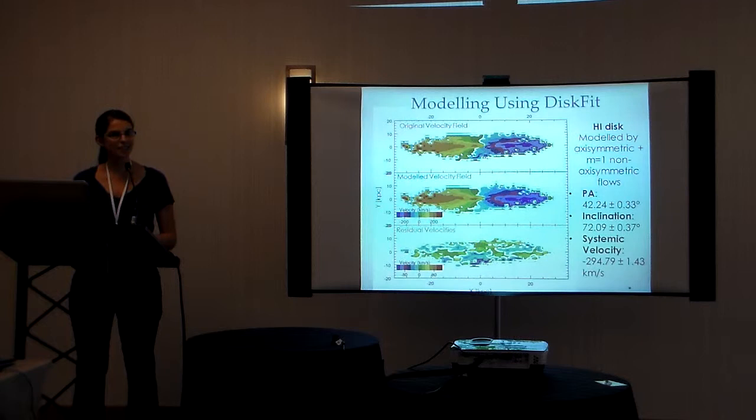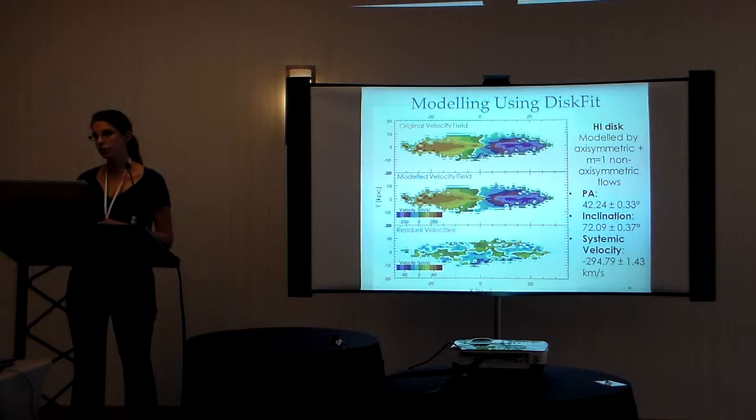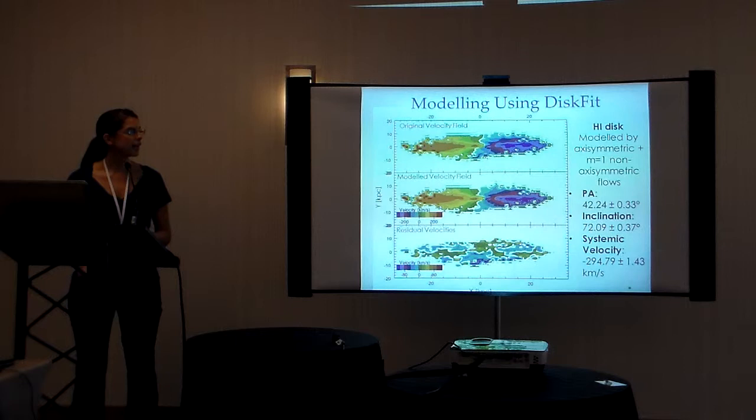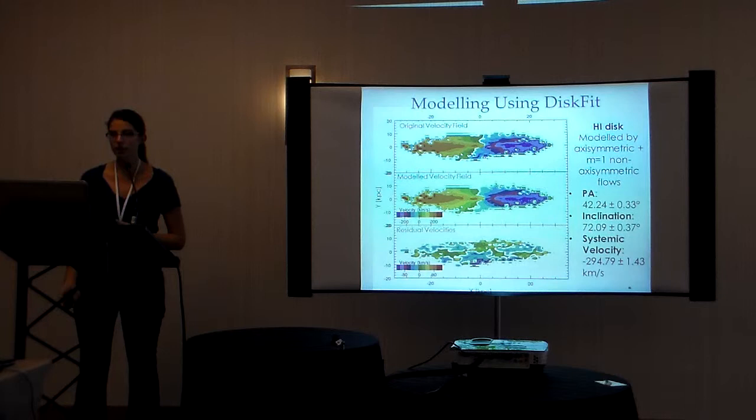This isn't completely unexpected. Many previous studies have also found that there are significant non-axisymmetric velocities in the inner 5 kiloparsecs of the H1 disk of M31. And again, you can see from the residual velocities that this fit is quite good to our data.